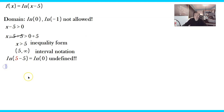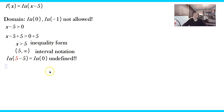What about the vertical asymptote? That's equal to x equals 5. So x equals 5 is the vertical asymptote.